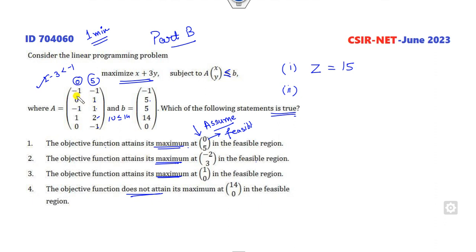-2 plus 3 less than 5, satisfied; +2 plus 3, 5 satisfied; -2 plus 6 less than 14, satisfied; 0 minus 3 less than 0, satisfied.